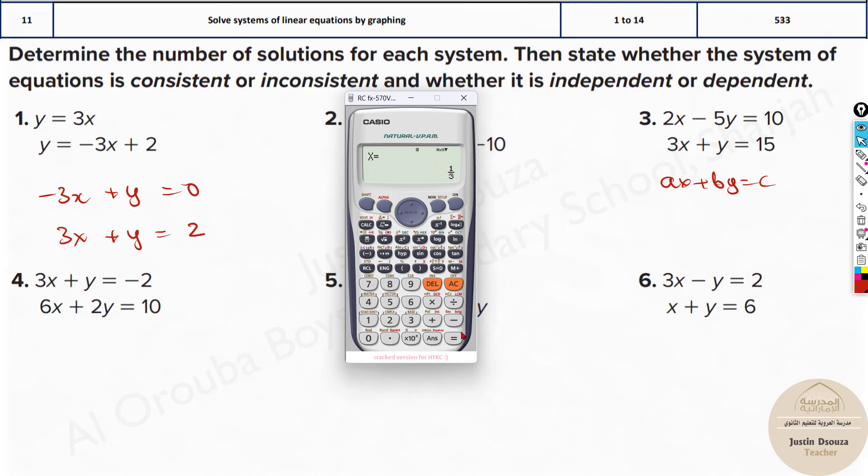Now, we are not bothered about the answers. They are not asking for answers. We got the solution, right? That means if you graph these two equations, they will meet at a certain point. That was at 1/3 comma 1. So they are meeting at a point. This means there is a solution. So it is consistent.